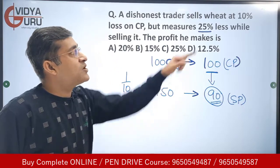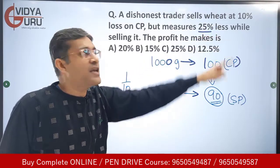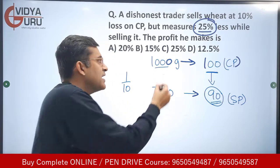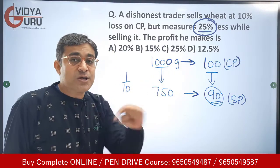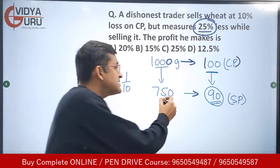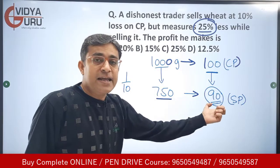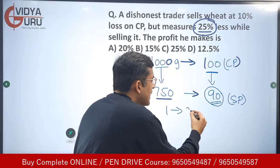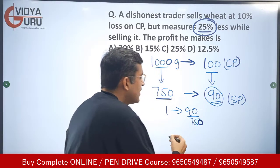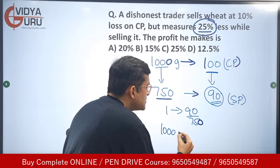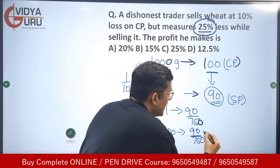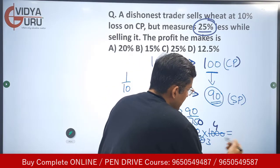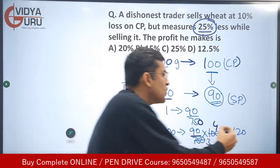He is giving you 750 grams instead of 1000 grams. The cost price of 1000 grams is 100, but the selling price of 750 grams is 90. Using the unitary method: the selling price for one gram is 90 upon 750, so the selling price of 1000 grams is 90 upon 750 into 1000, which works out to 120 rupees.